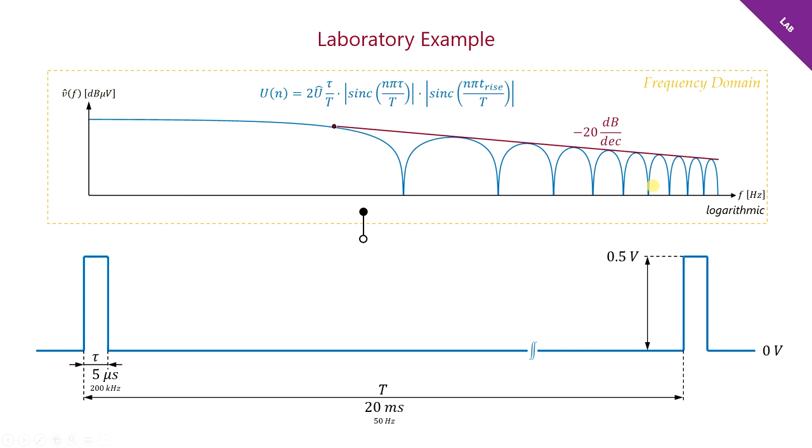A rectangular pulse train in the time domain will show us a sinc function in its frequency domain. In another video, I will explain this sinc function in more detail, but for today, it is sufficient to know that we can calculate the spectrum by this formula here. By inserting some numbers, we can also calculate the amplitudes of the spectrum lines.